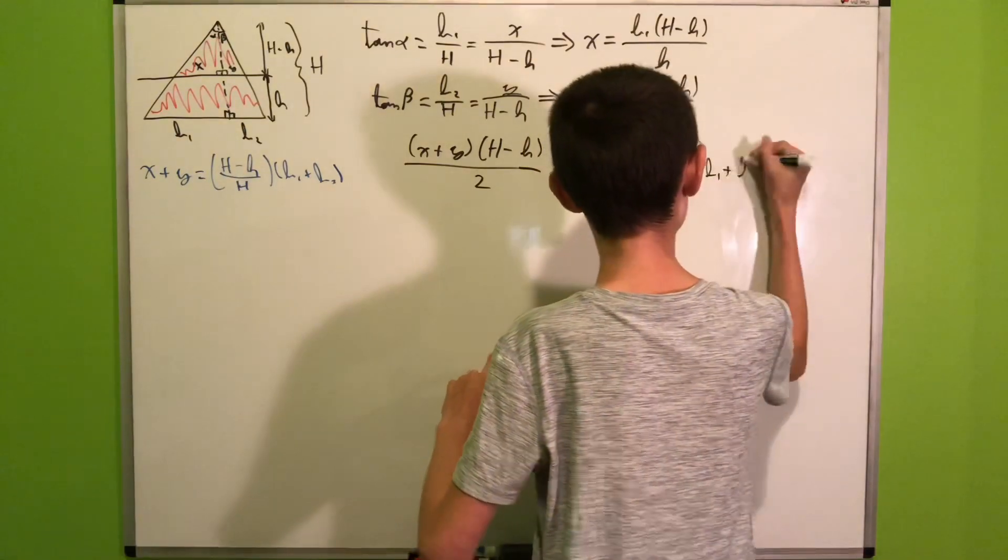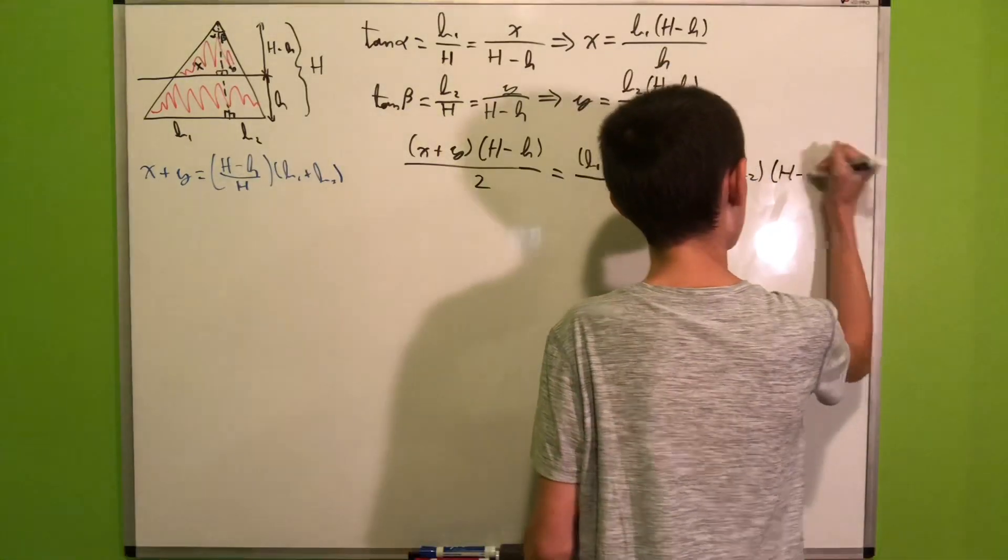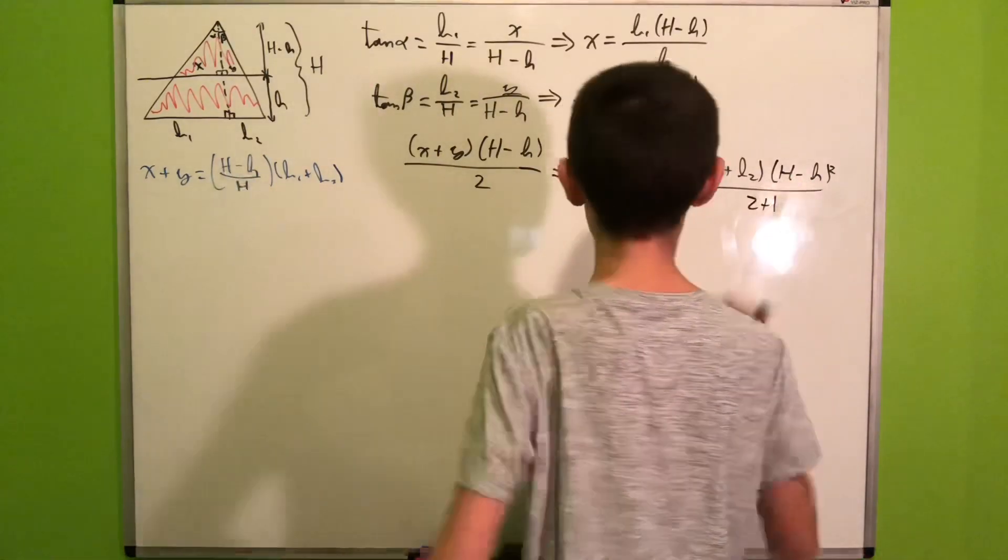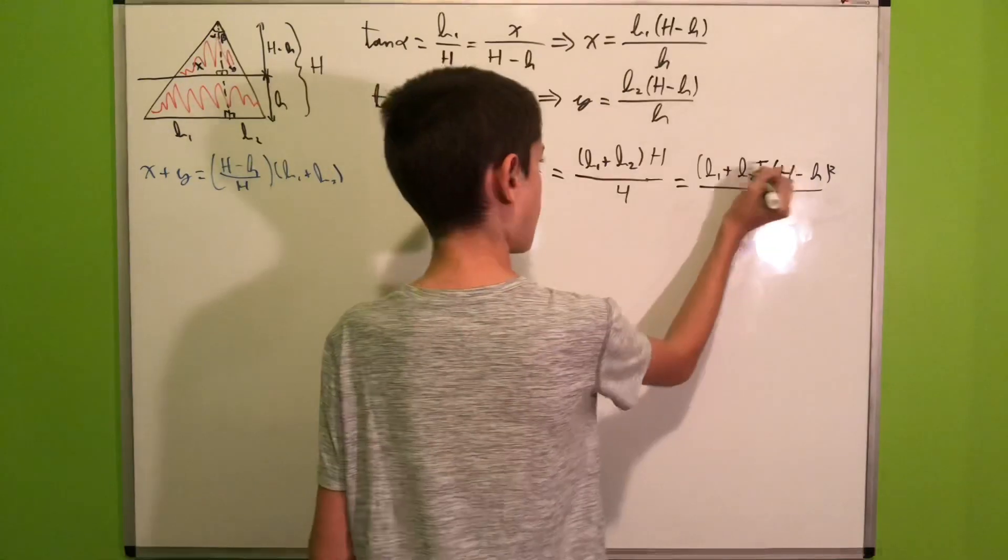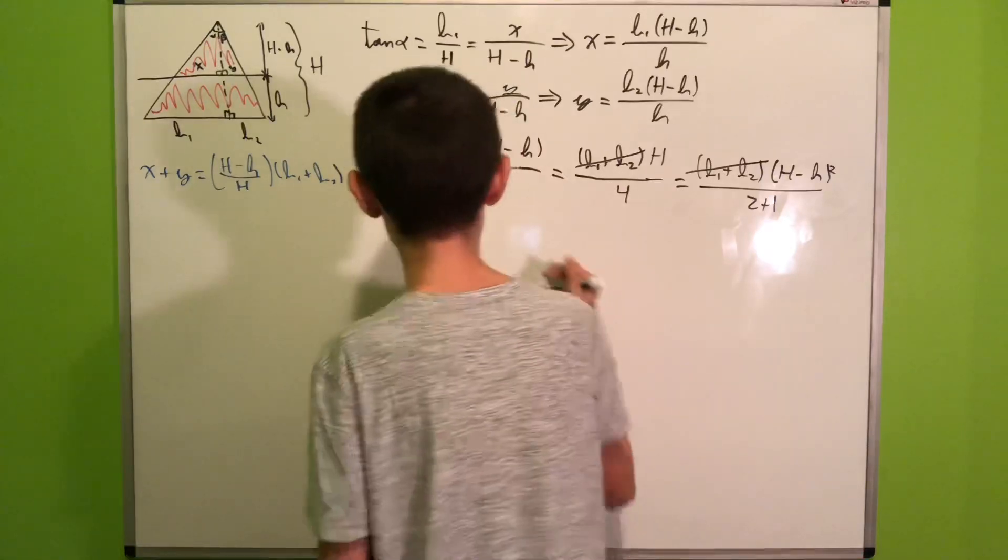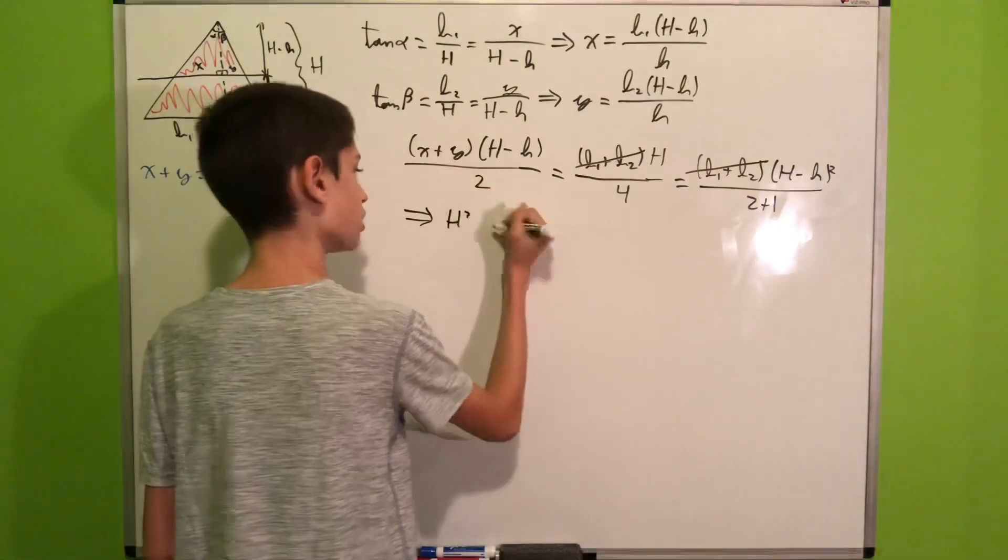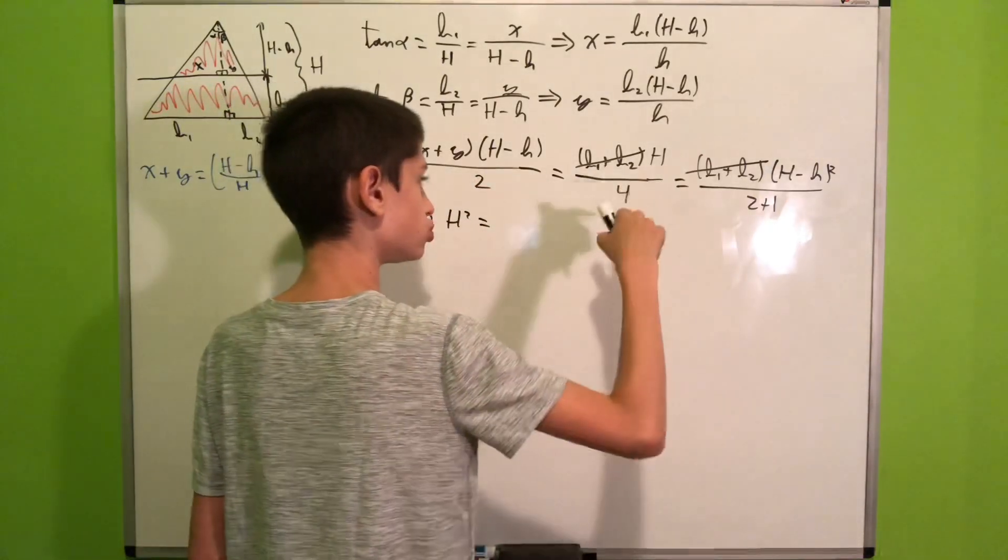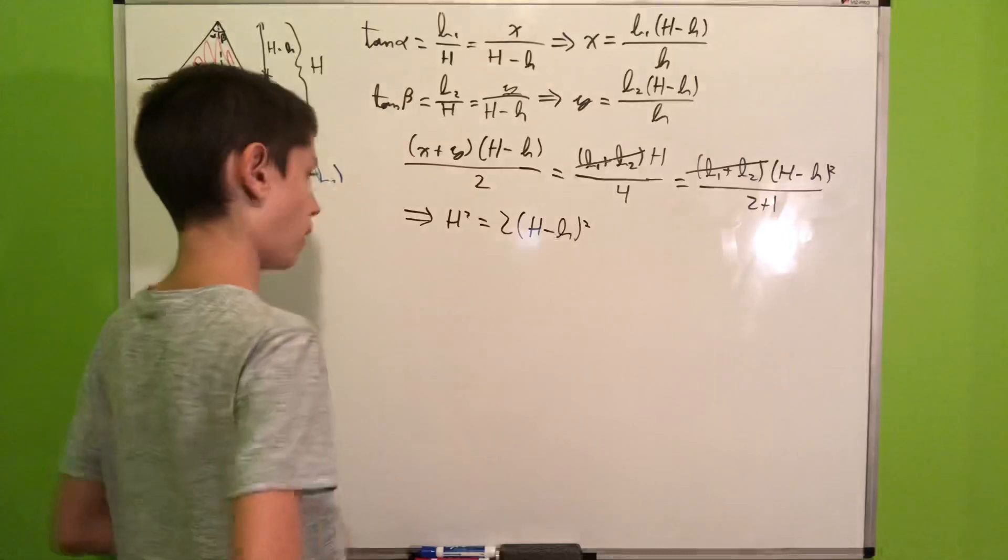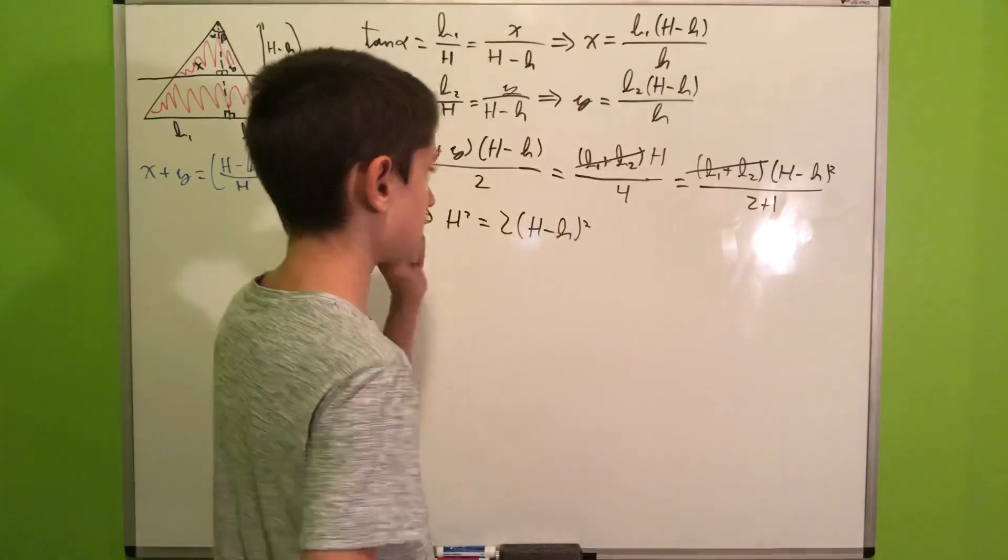Our x plus y can be expressed as, if we factor out the (H minus h) over H, we get b1 plus b2. Hence we can substitute that in so we get (b1 plus b2) times (H minus h) squared all over 2H. Then b1 plus b2 cancels out on both sides and we can multiply both sides by 4H to get that H squared equals 2 times (H minus h) squared.